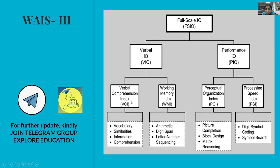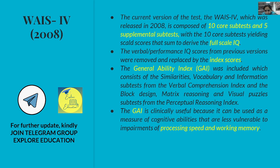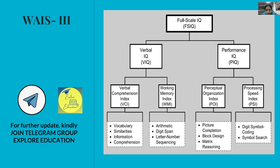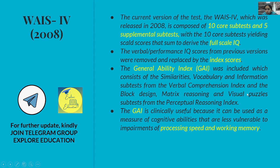The General Ability Index (GAI) consists of Similarities, Vocabulary, and Information subtests from the Verbal Comprehension Index, plus Block Design, Matrix Reasoning, and Visual Puzzles from the Perceptual Reasoning Index. GAI is clinically useful because it measures cognitive abilities that are less vulnerable to impairments of processing speed and working memory — it intentionally excludes those two indices.